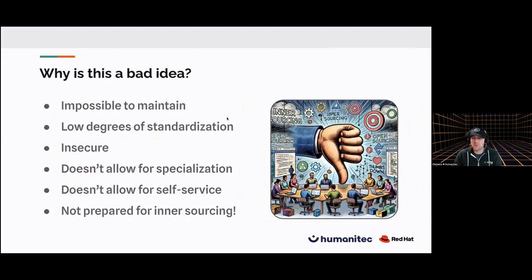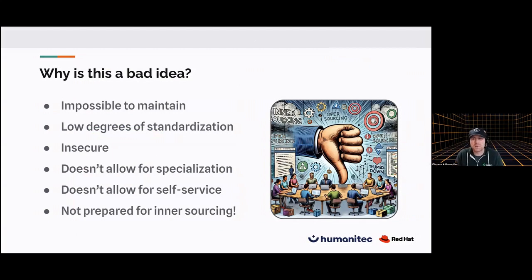To quickly sum up: this gets impossible to maintain over time if you have no standardization baked in from the beginning. There are low degrees of standardization and repositories drift further apart over time. It doesn't allow for specialization — inheriting from a service and mutating it just a tiny bit gets much harder. And as said, this is really not prepared for inner sourcing at all.